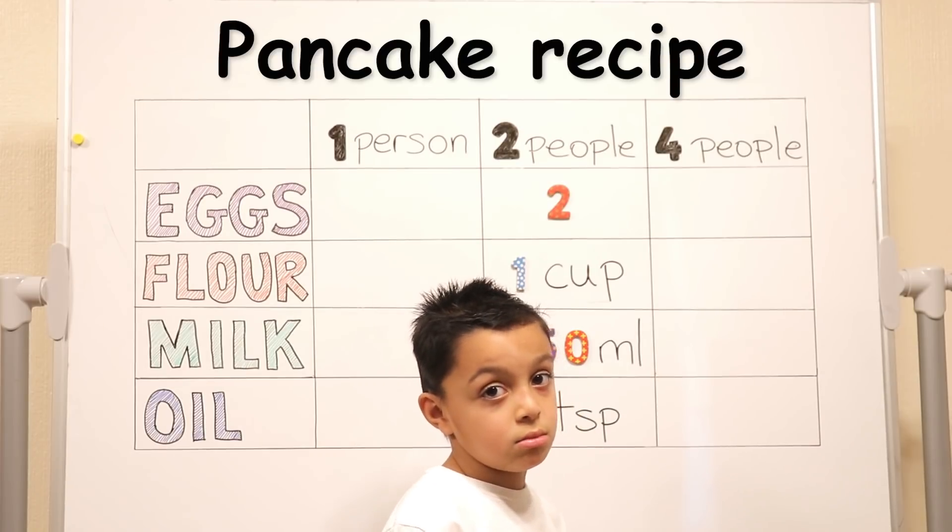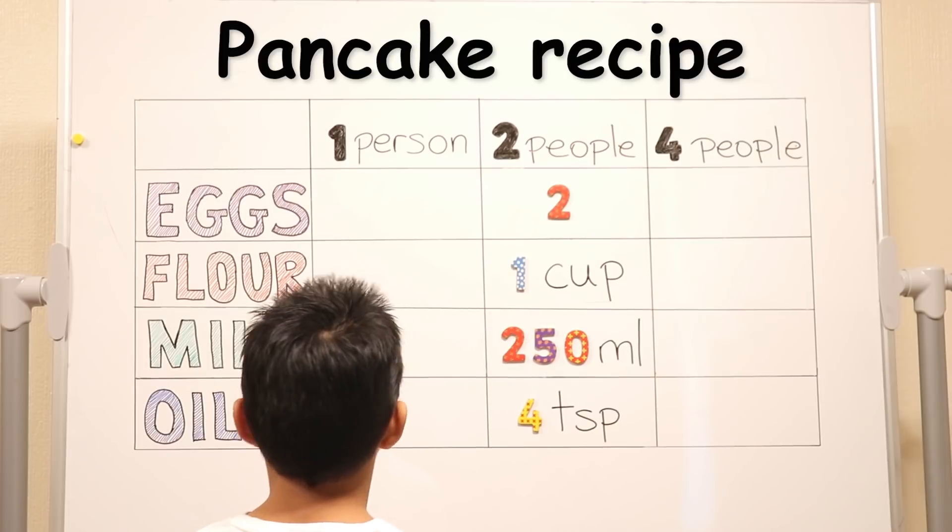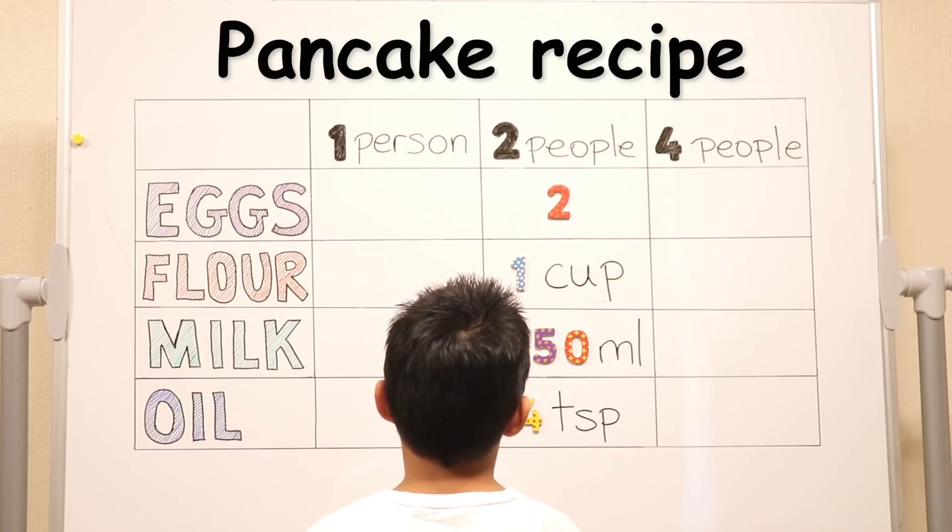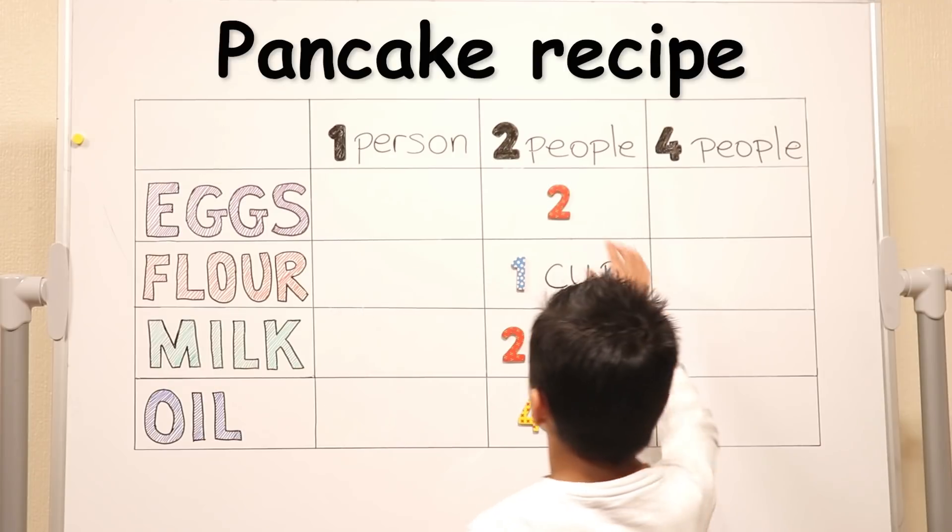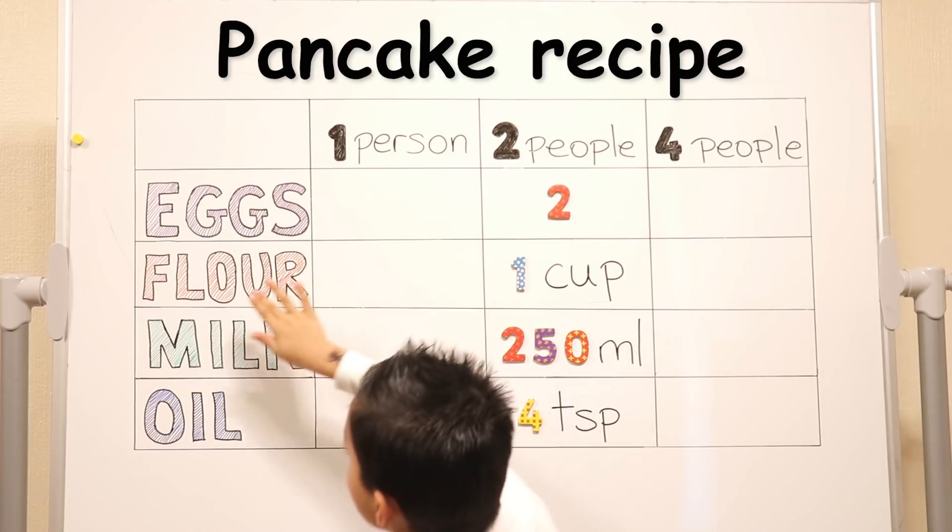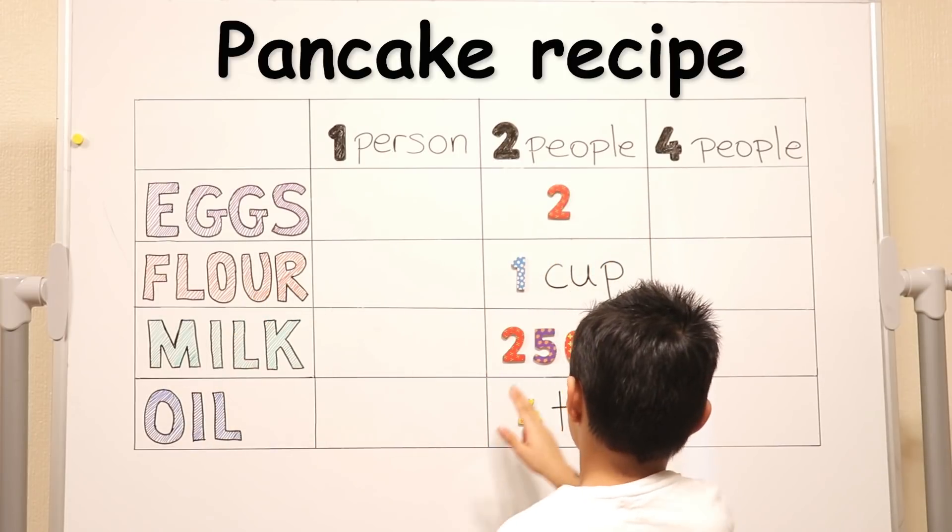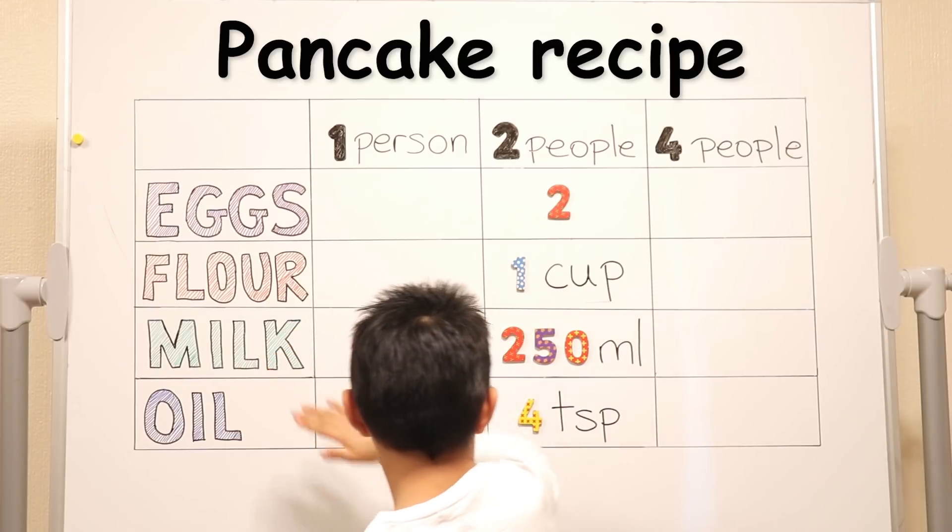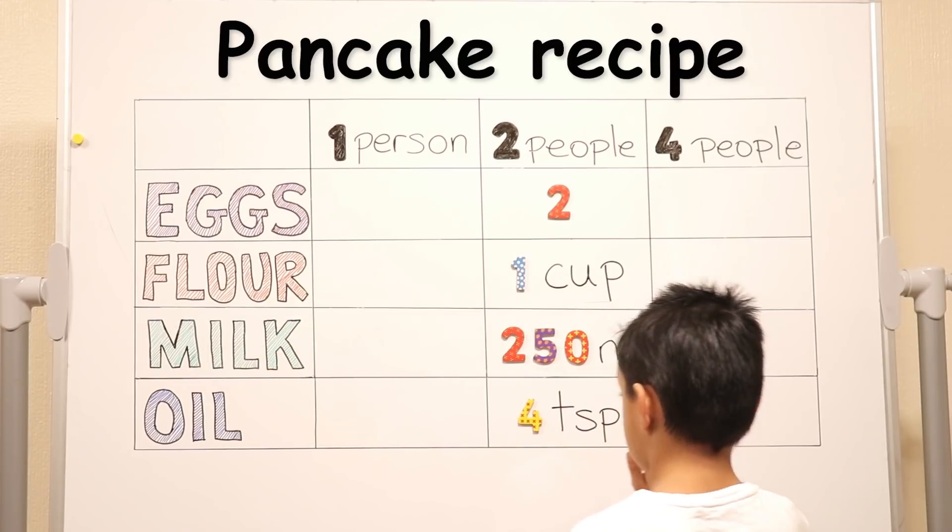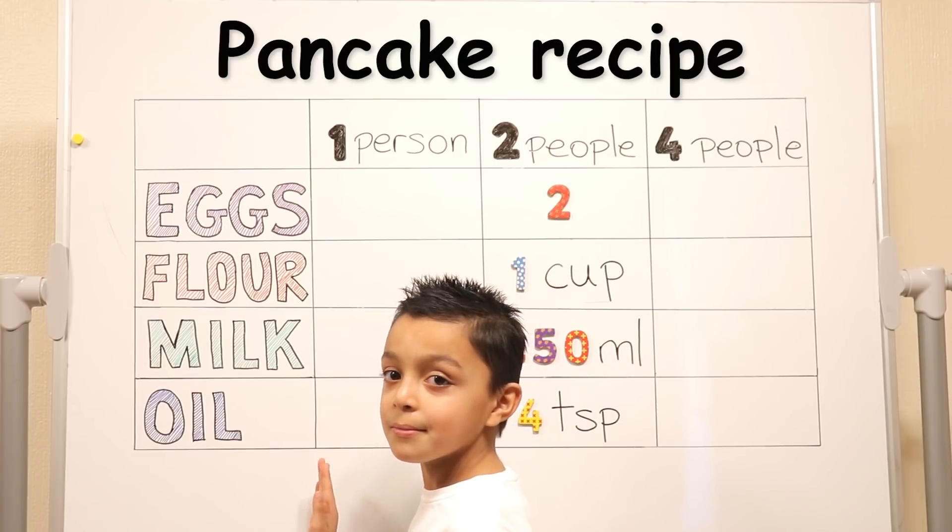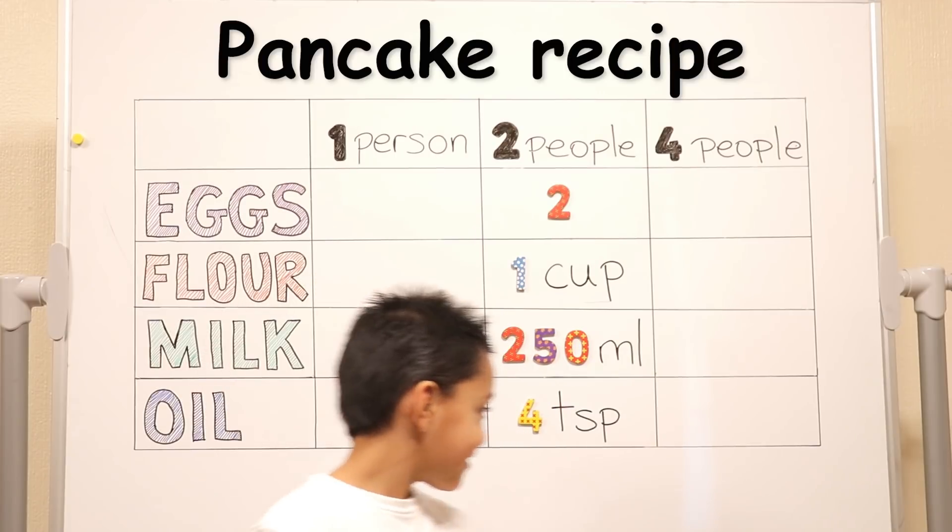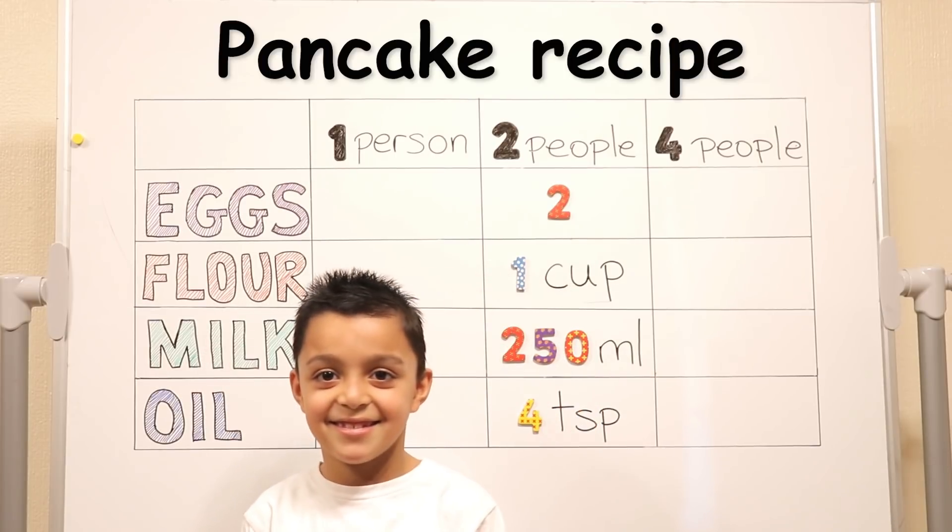So you need to look at the ingredient on the left and that will go with the number in the same row. Oh, so two eggs. Yes. One cup of flour. Yes. And then 250 milliliters of milk. Yes. And four teaspoons of oil. Very good. Very impressive. I didn't know that you knew what teaspoons would look like, abbreviation.